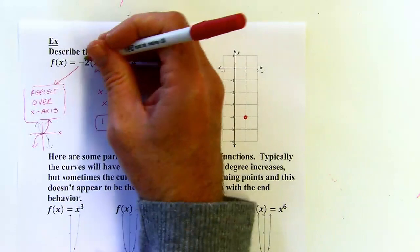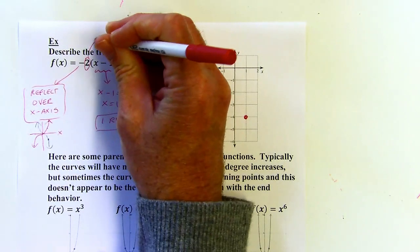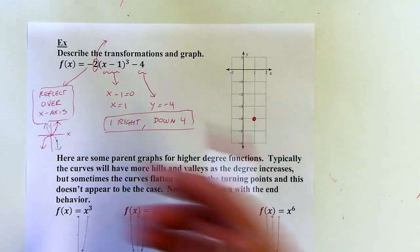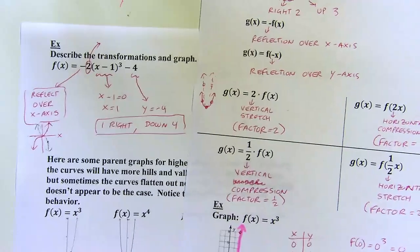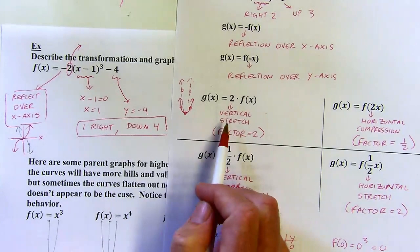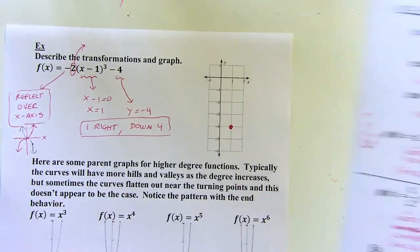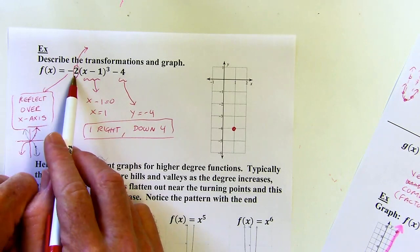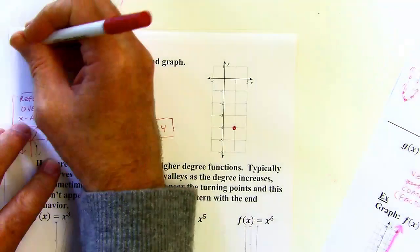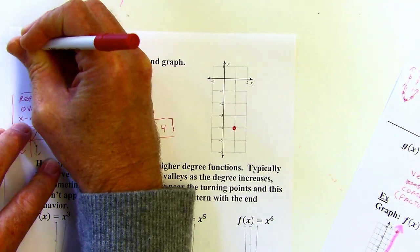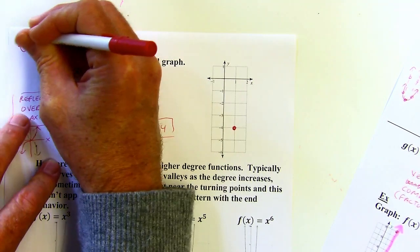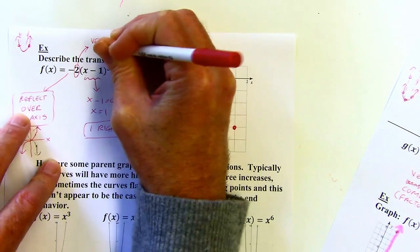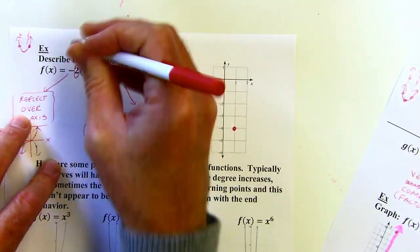And then we still have the two to deal with, and in my opinion this is the trickiest part. I like to think back to a parabola. This one is going to be a vertical stretch by a factor of two. To figure that out: if it were a parabola, it would be narrower, and I've got a vertical change because it's not inside touching the x. To get narrower with a vertical change, those two points would have to move up, and that's how I can figure out that this is a vertical stretch. The factor would be two there.